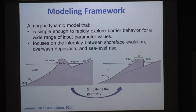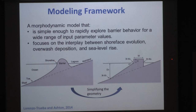The first step is to idealize the geometry. We collapse the barrier surface into a linear unit that changes over time depending on the forcing. The subaerial portion of the barrier is characterized with just two parameters: the average elevation above sea level and the width. We also assume a linear back barrier lagoon slope. This allows us to characterize the system with three variables: the location of the surface toe, the shoreline, the back barrier position, and the elevation above sea level.